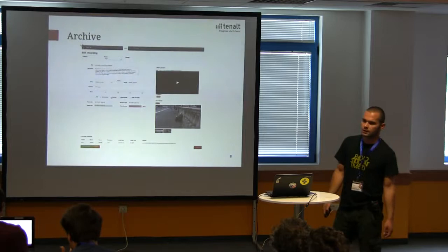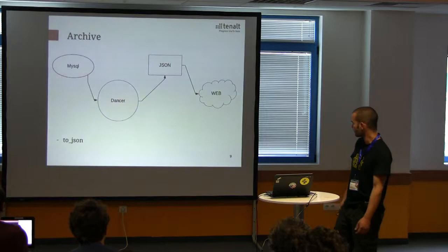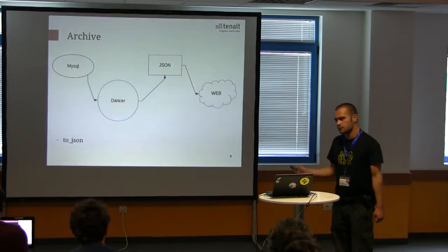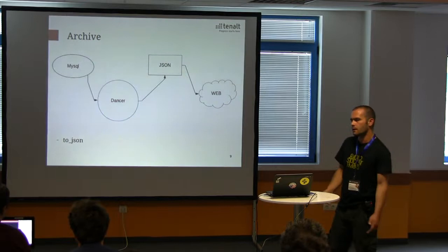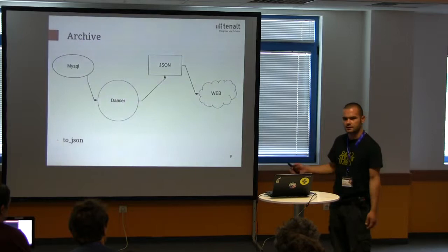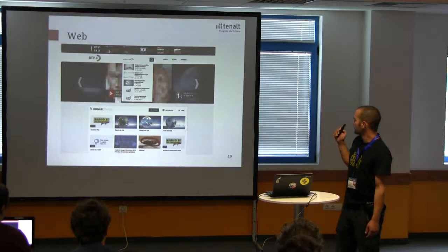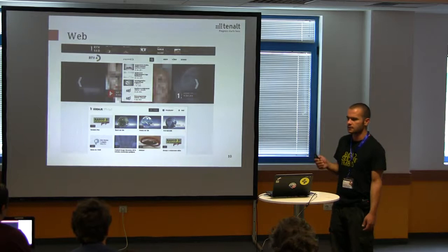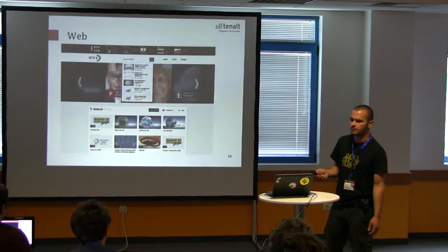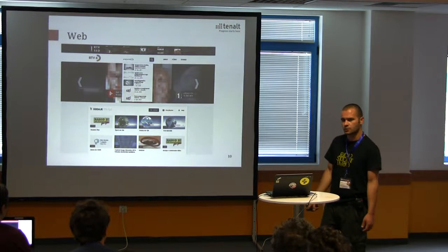After that, we had to give people the content, so we used Dancer also for the API. The API is basically JSON — Dancer has a really nice feature where you take a Perl structure and just say 'to JSON' and it generates it. The API has multiple calls with many parameters, but the big thing was full-text search, which actually generates most of the load on the API because there is an autocomplete that hits directly to the API.